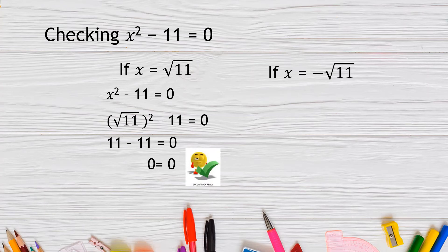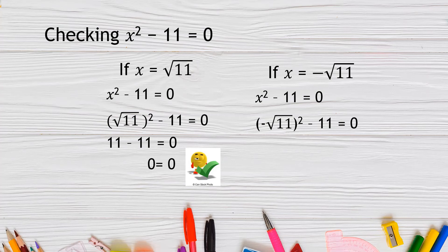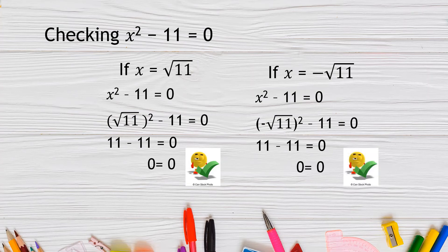If x = −√11, substituting into the original equation: (−√11)² − 11 = 0 simplifies to 11 − 11 = 0, and 0 = 0. That is correct.